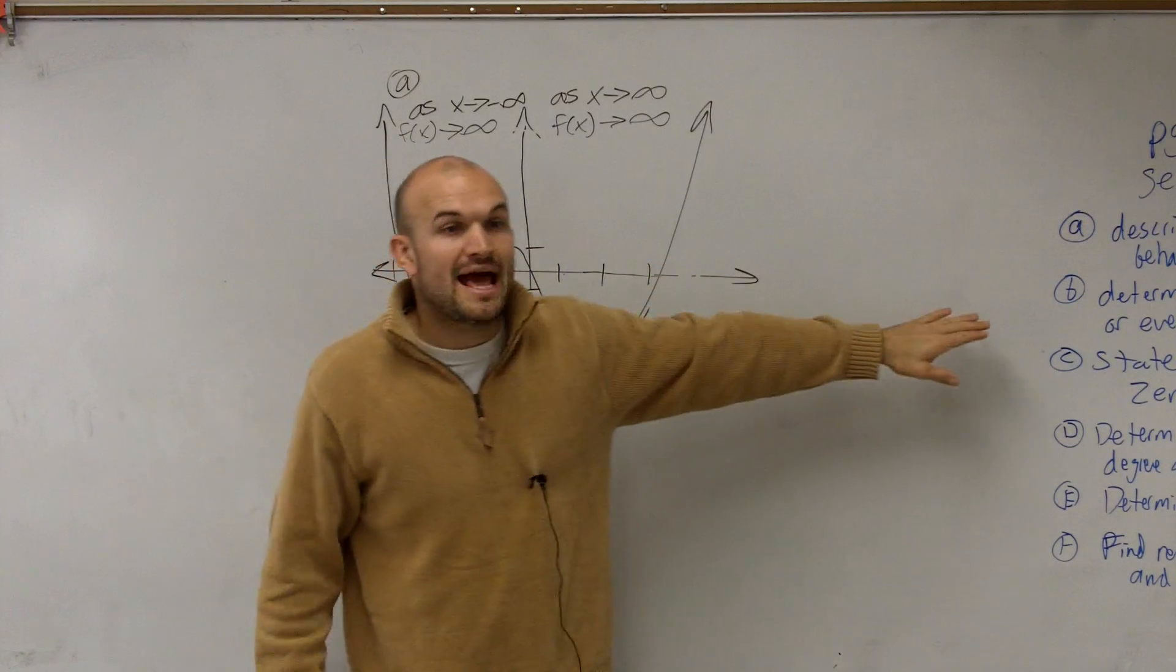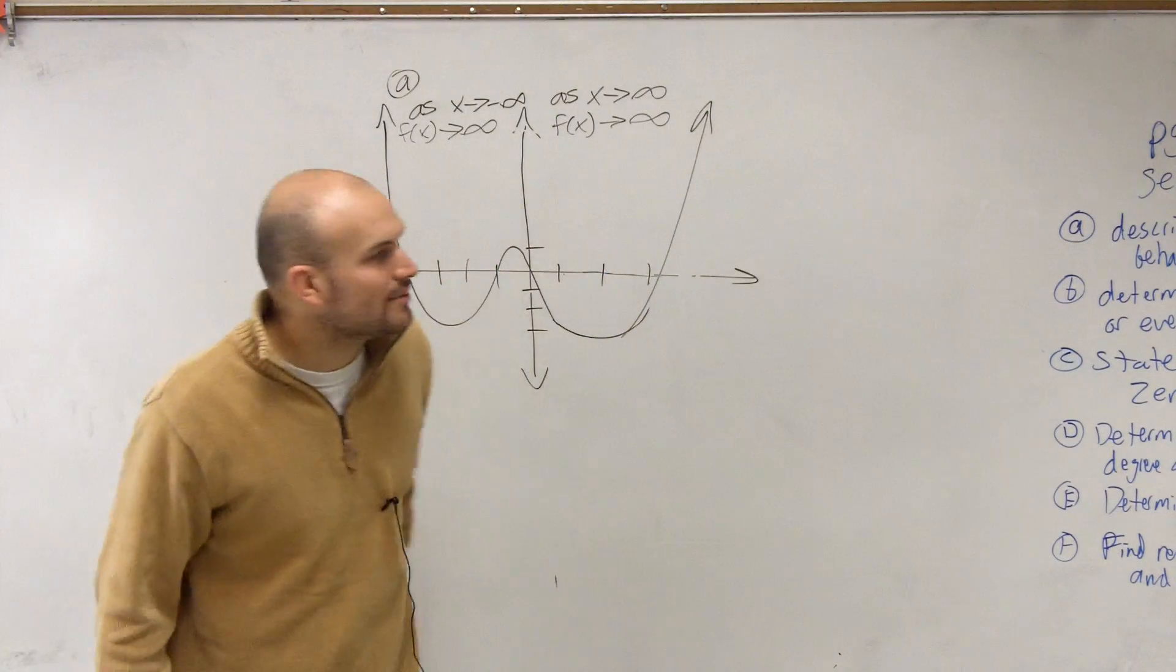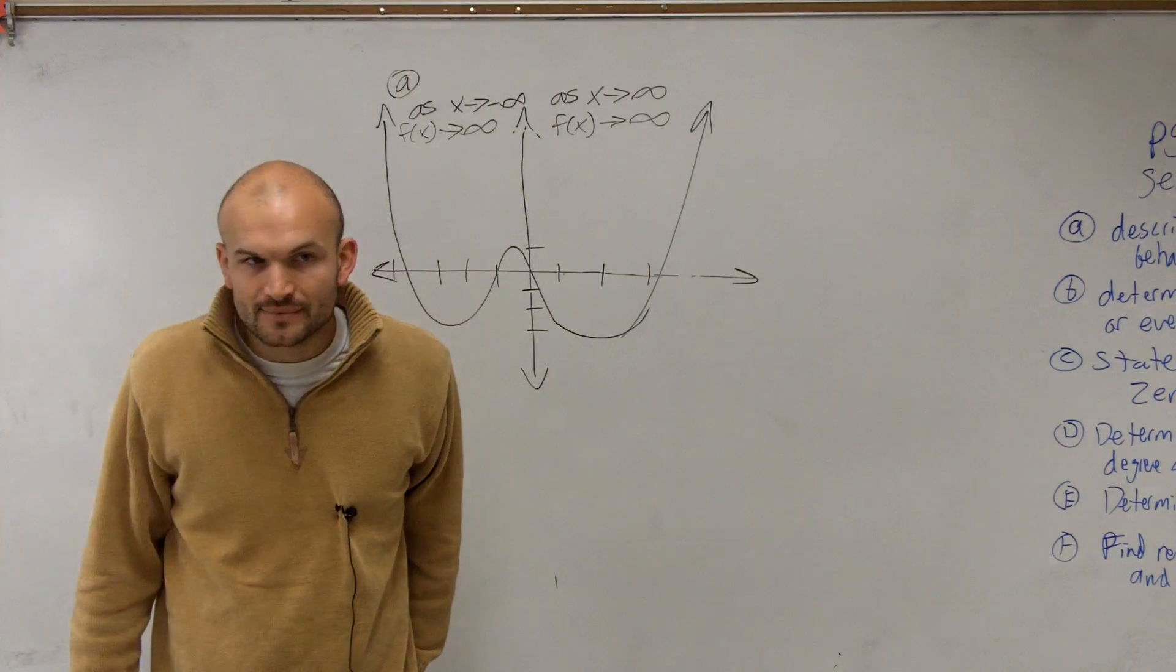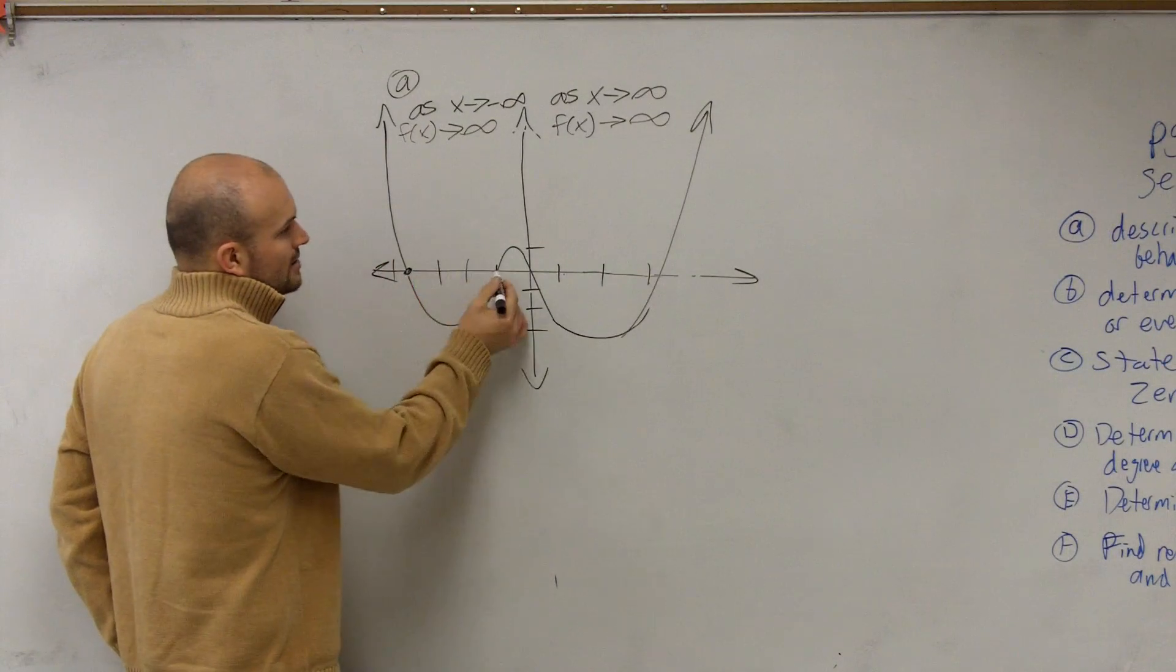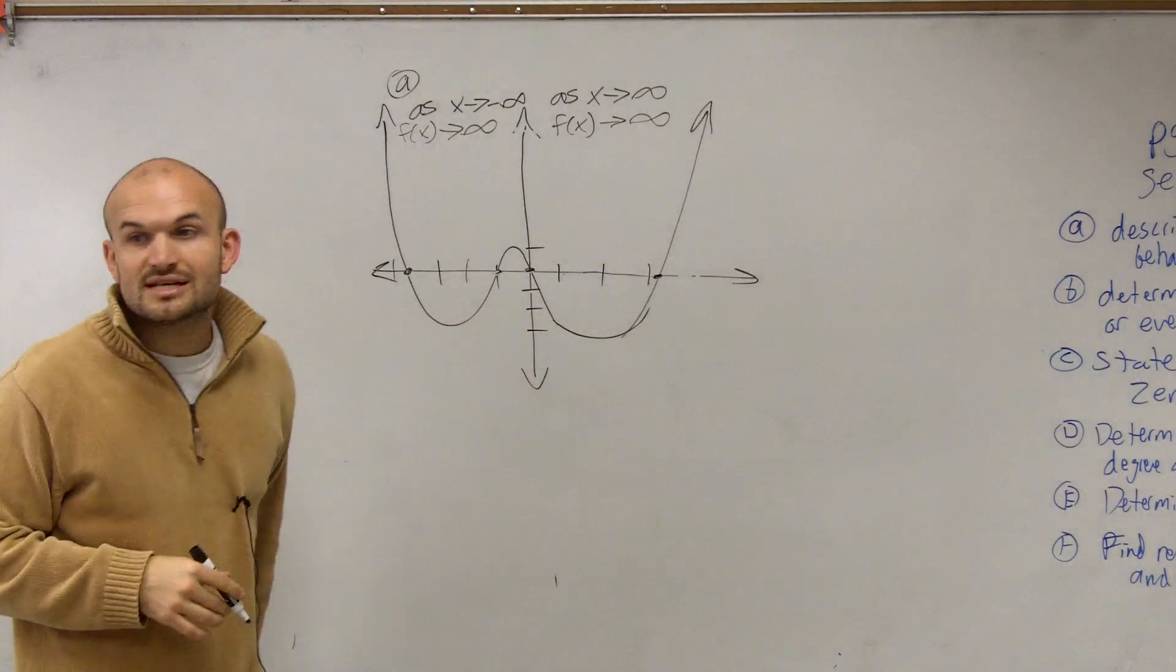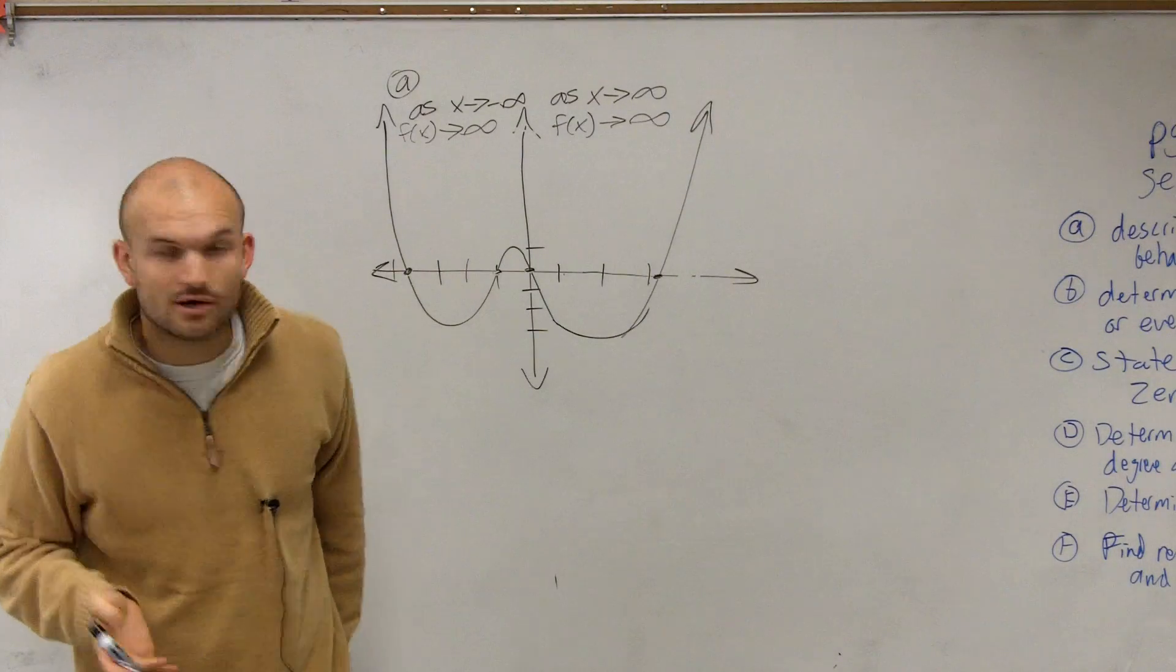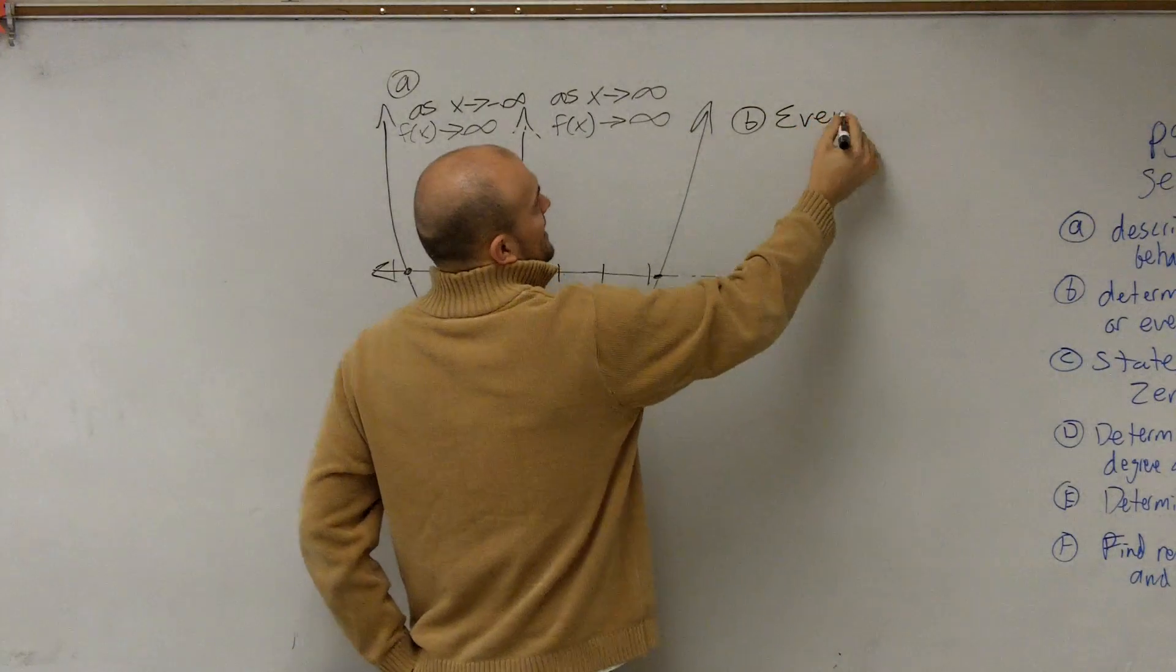Now the next one, I'll pick on Sam to go and answer. No, no, I'm just kidding. You don't have to. But Alex, maybe. OK. So what I have is determine if it's an odd or even degree. So remember, what we could do is look at the number of zeros. You could say 1, 2, 3, 4. So therefore, since we have four even zeros, we could say that we know that it's going to be an even degree.